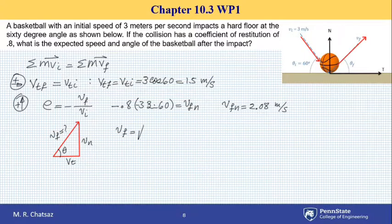Therefore, final velocity has a magnitude of square root of 1.5 squared plus 2.08 squared. This gives a magnitude equal to 2.56 meters per second.